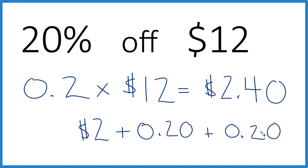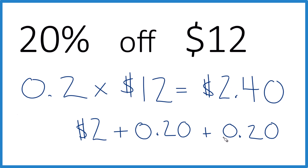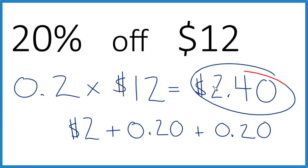And then I would add that together. $2 plus 20 cents plus 20 cents is — you guessed it — $2.40. That's how you take 20% off $12. This is Dr. B. Thanks for watching.